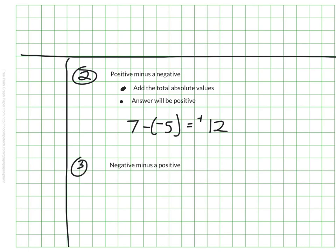A third situation would be negative minus a positive. When subtracting a positive from a negative number, we would need to add the total absolute values, and the answer will always be negative. Let's look at an example. We have negative 7, and we subtract positive 5. 7 plus 5 would be 12, but unlike in example 2, this answer would be negative. We'd be moving further down the number line.